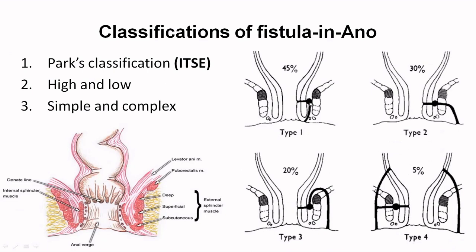Type 1 is I — that is the inter-sphincteric type and it is the most common. Type 2 is trans-sphincteric; it extends through both the sphincters. Type 3 is supra-sphincteric — it goes above the external sphincter, but the opening may still be low. Type 4 is extra-sphincteric, meaning it is outside the sphincter, basically arising from ischio-rectal or ischio-anal pathology or a supra-levator pathology tracking down.